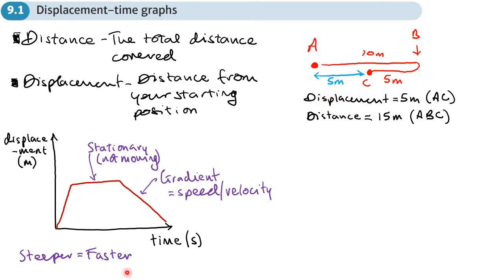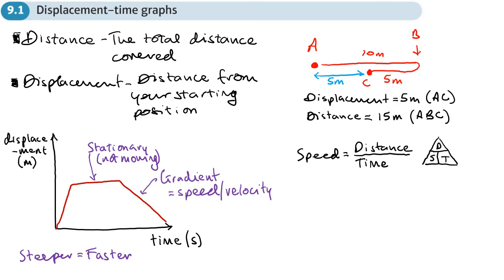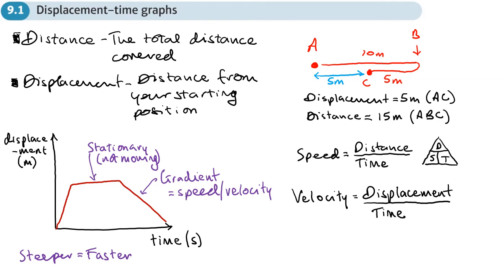The difference between displacement and distance gives us a difference between speed and velocity. Speed equals distance over time — we have that formula triangle linking speed, distance, and time. But velocity is equal to displacement over time. We know the difference between displacement and distance, so when finding velocity we use displacement divided by time, not distance.